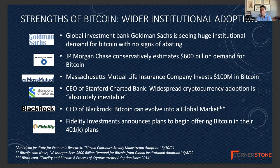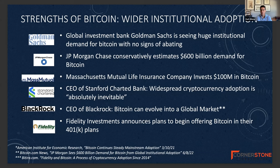Massachusetts Mutual Life Insurance Company invested $100 million of their portfolio into Bitcoin. Just in the last several months, both BlackRock and Fidelity Investments issued press releases saying they're now opening up Bitcoin as an asset class for their investors. Combined, BlackRock and Fidelity have about $13 trillion in assets under management. If just 1% of that $13 trillion is allocated to Bitcoin, that's $130 billion of additional market interest that will help increase the demand for Bitcoin.